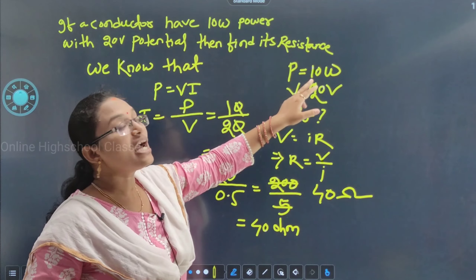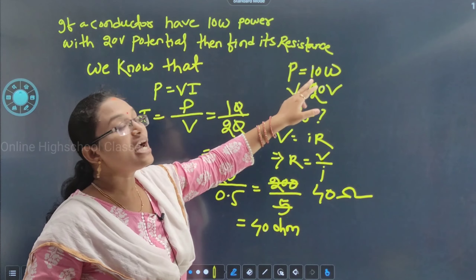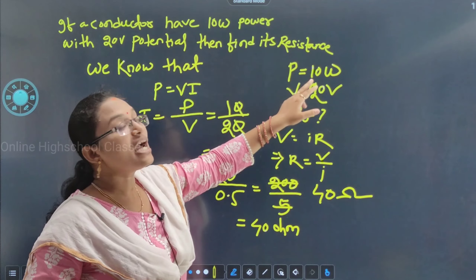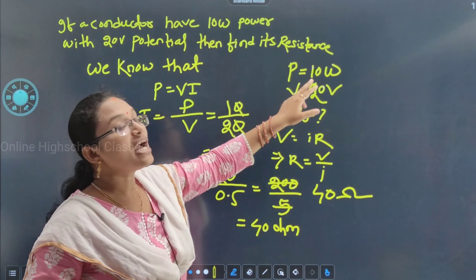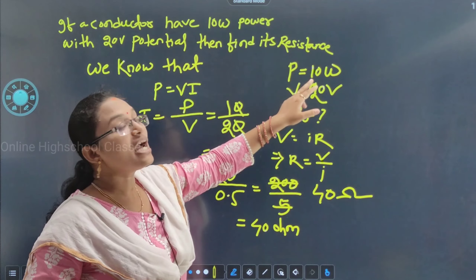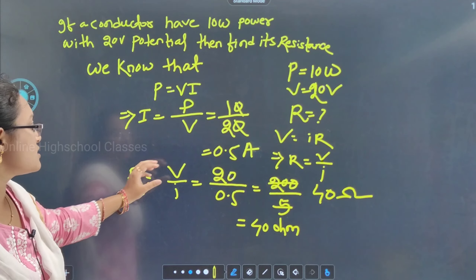To summarize: find current I using P = VI, giving I = P/V = 10/20 = 0.5 ampere, then R = V/I = 20/0.5 = 40 Ω. Next class we will solve more problems of this type.